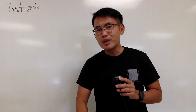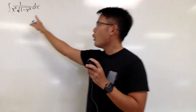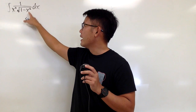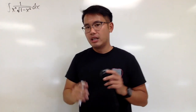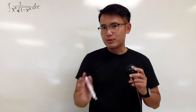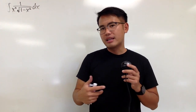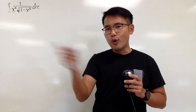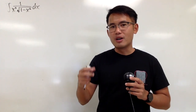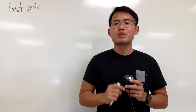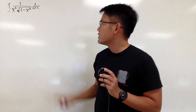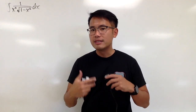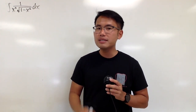In this video, I'll show you how to integrate 1 over x squared times square root of 1 minus x squared. As we can see, we don't have any obvious u-substitution — it's not x over square root of 1 minus x squared. So for this kind of situation, let's go ahead and use trig substitution.